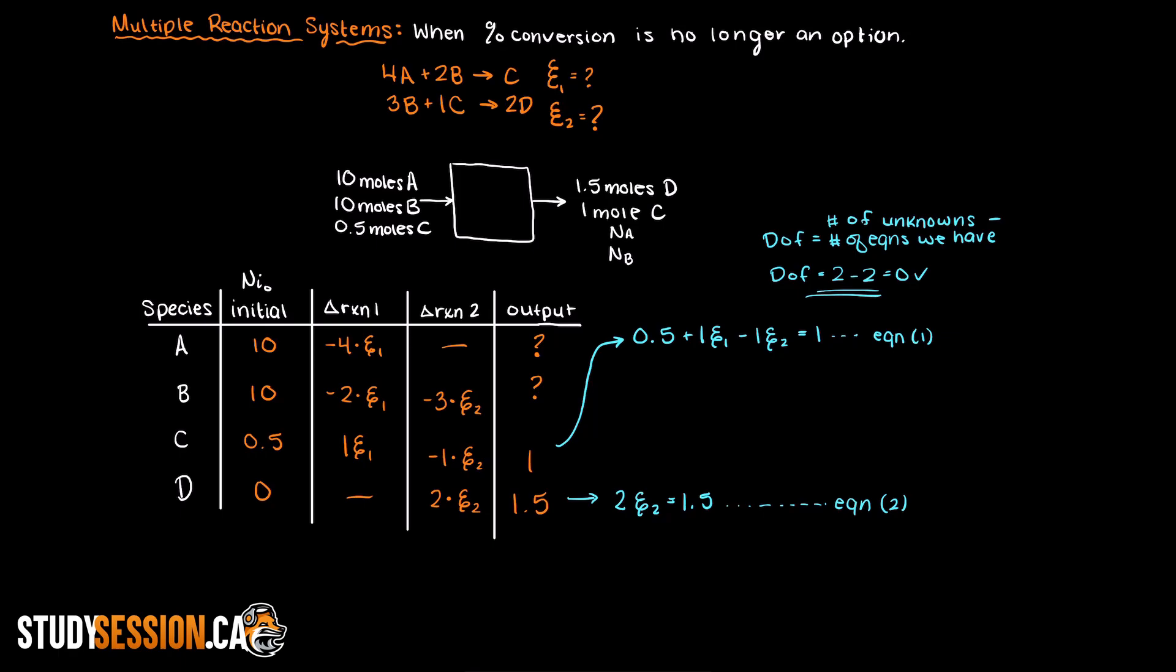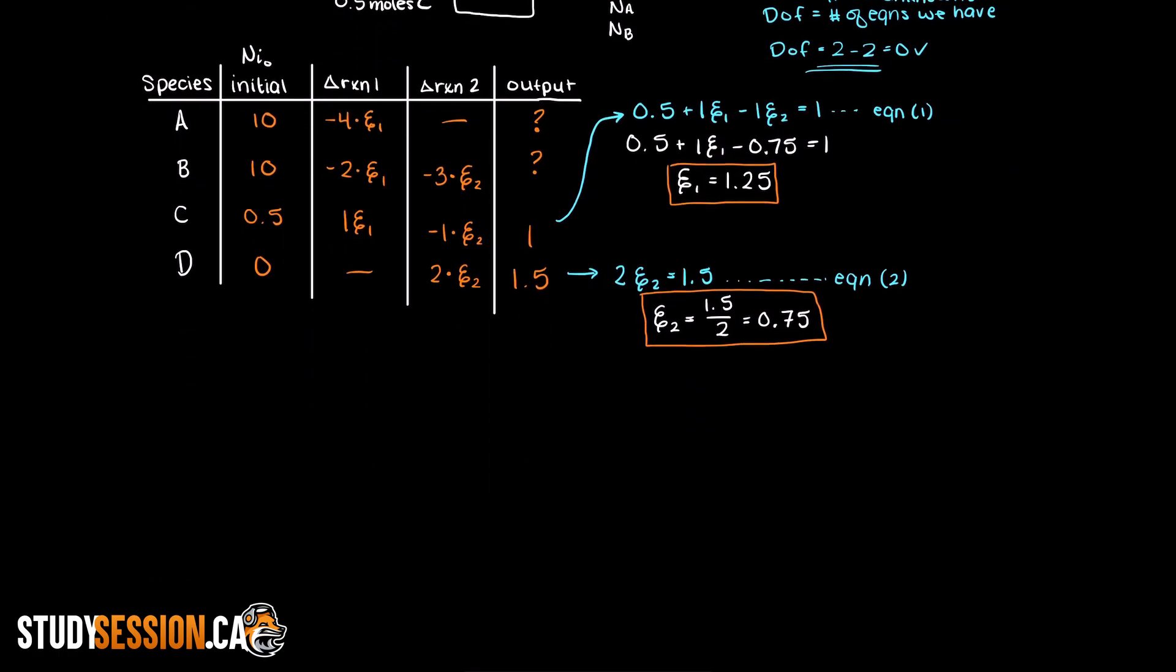So, let's go ahead and solve for the two extents of reactions. Extent 2 in this example can be solved quickly by dividing 1.5 by 2. Therefore, extent of reaction 2 is equal to 0.75. Now, that number can be quickly plugged into the first equation and used to solve for the first extent of reaction. This gives us a value of 1.25 for our first extent of reaction.